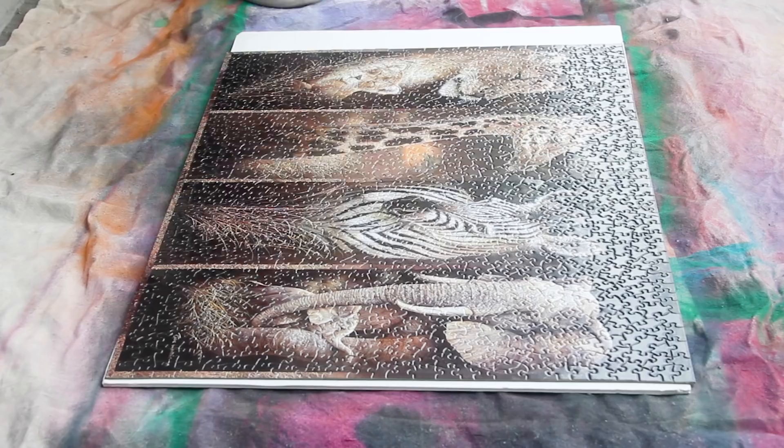Then use white spray paint to paint over the entire thing. You'll want to do really light coats so that the pieces don't end up sticking together.